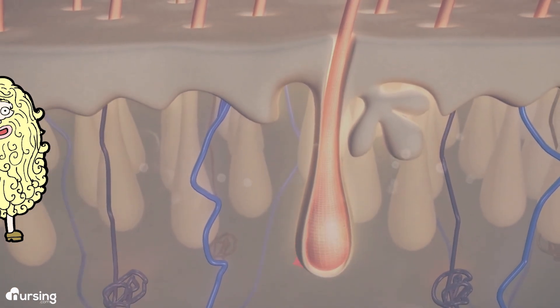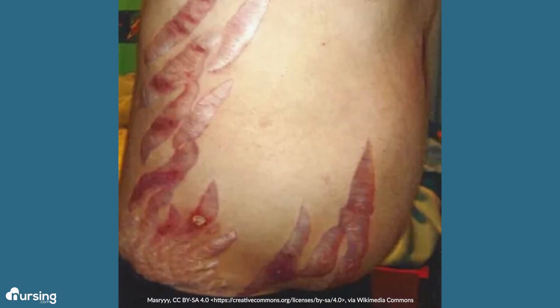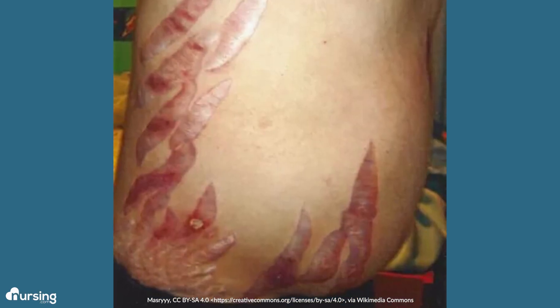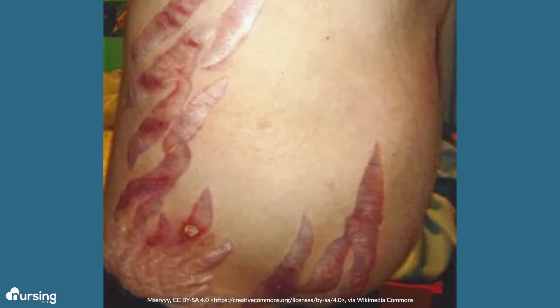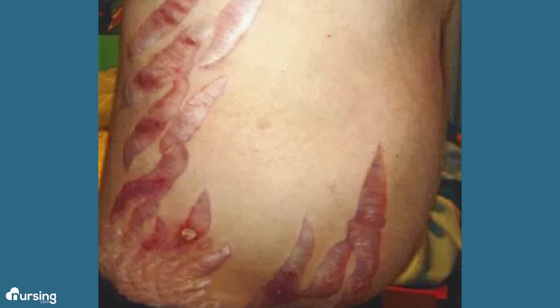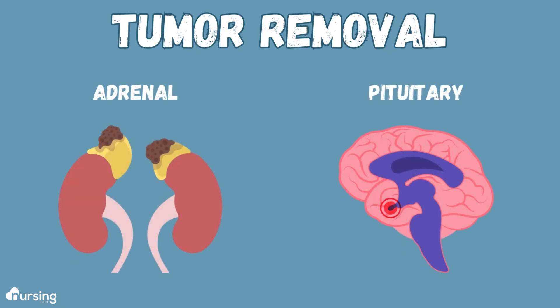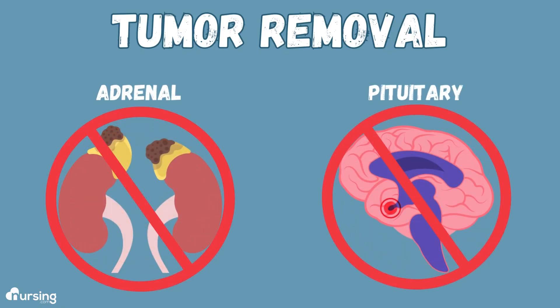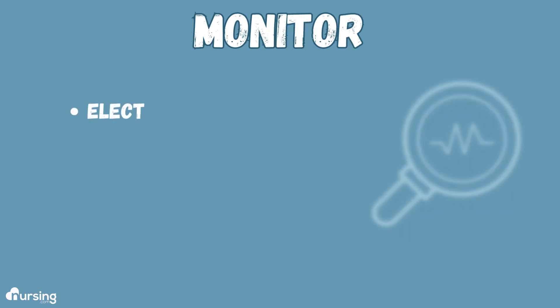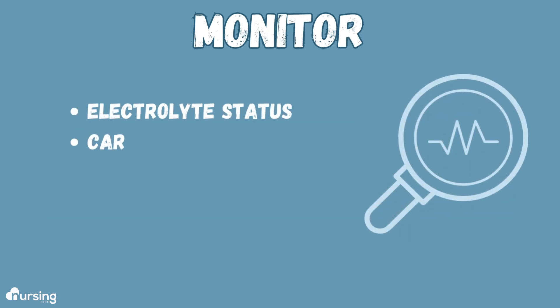This can result in striae or stretch marks on the torso because the skin is so fragile. Removal of the adrenal or pituitary tumor as well as stopping the use of corticosteroids are forms of treatment for Cushing's disease. Monitoring electrolyte and cardiovascular status is of utmost importance.